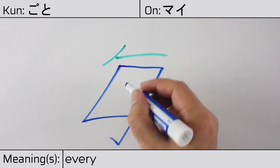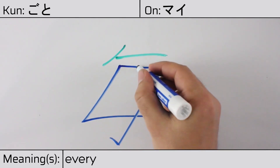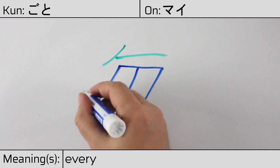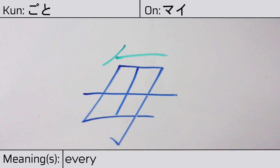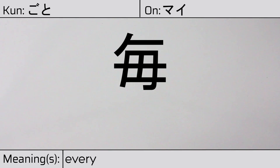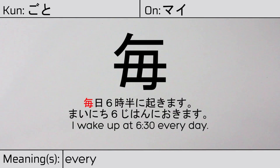This character is made up of the following radicals or parts: katakana no, kanji ichi, then the radical meaning must not or do not. Our example sentence is: Maynichi, Rokujihan ni okimasu — I wake up at 6:30 every day.